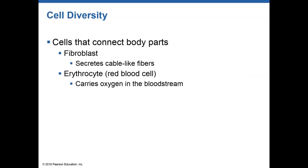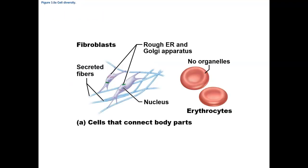Some cells — fibroblasts — function in producing cable-like, really strong proteins. These proteins help to hold structures together; they're binding proteins that also help to resist mechanical stressors. We have erythrocytes, also known as red blood cells, that carry oxygen and nutrients throughout our body and carry waste products away from our cells. Here you can see what a fibroblast looks like and the fibers produced by fibroblasts.